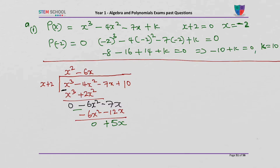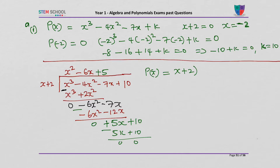Because minus 7x minus minus 12x is plus, so that's 5x. Bring the 10 down. What can we multiply x by to get 5x? Multiply by 5. 5 times x is 5x, and 5 times 2 is plus 10. Take away: 5x minus 5x is 0, and 10 minus 10 is 0. So we've got the quotient. P of x equals x plus 2 times the quadratic part, which is x squared minus 6x plus 5.